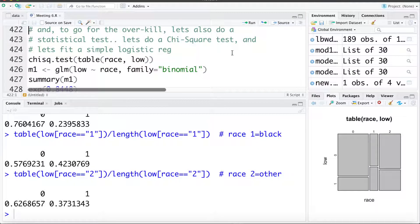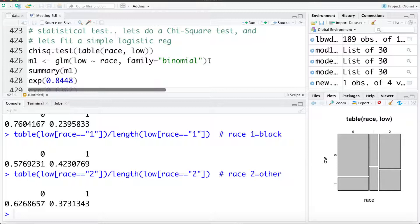We can also carry out a chi-squared test to test if there is a statistically significant association. Or we can fit a logistic model seeing if we can use race to predict if they're low birth weight or not.